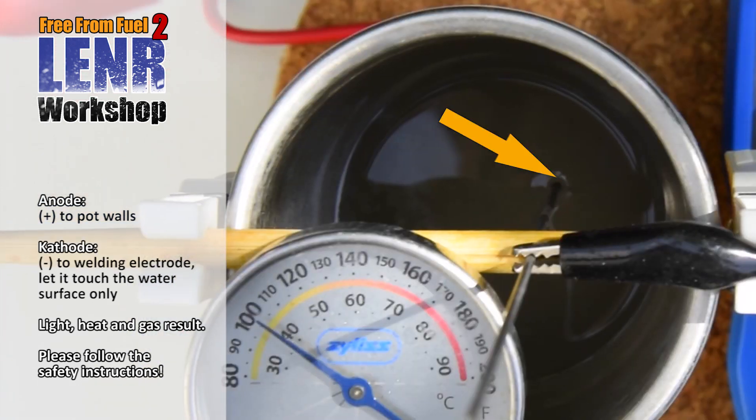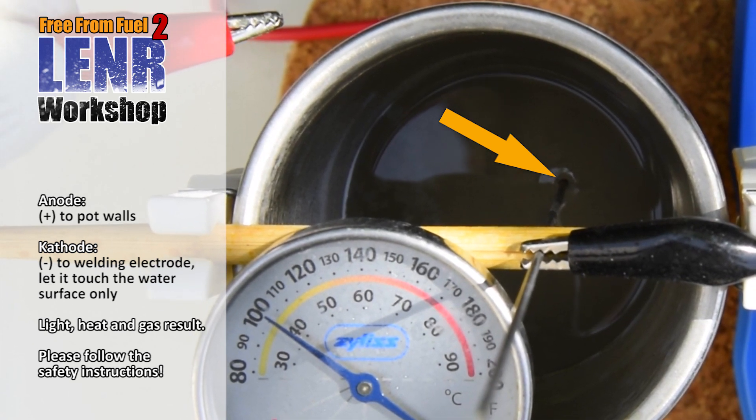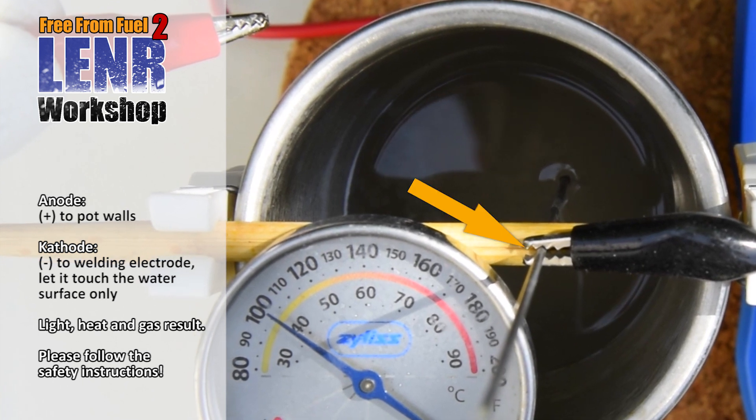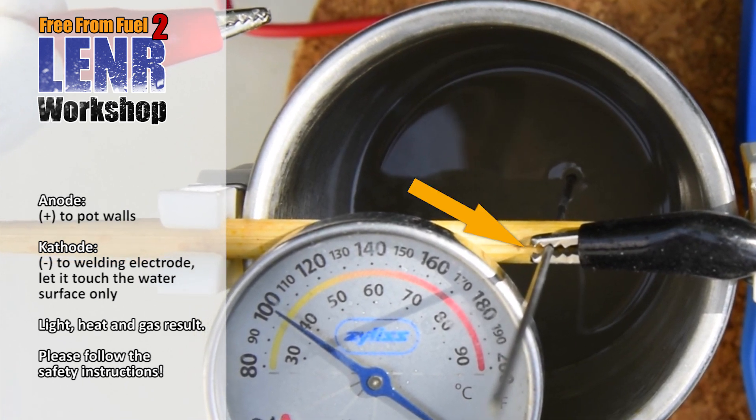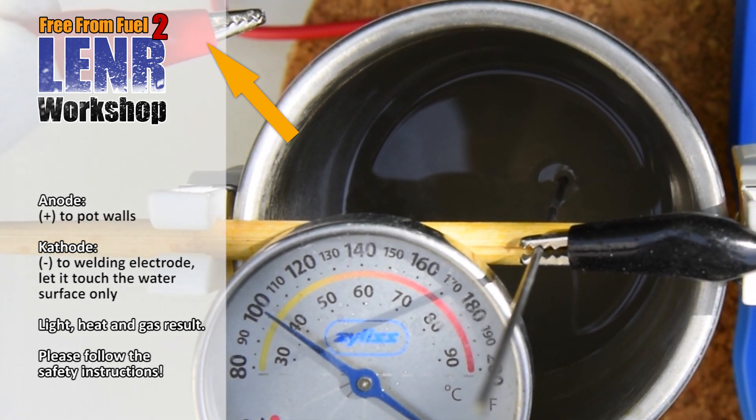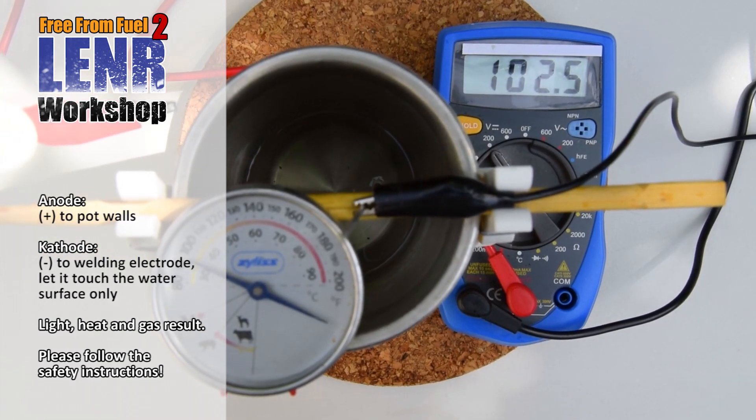The electrode just slightly touches the water a bit. Then the black cable, negative, goes to the electrode. And the red cable, positive, goes to the mug. And then be careful, the lye will splatter.